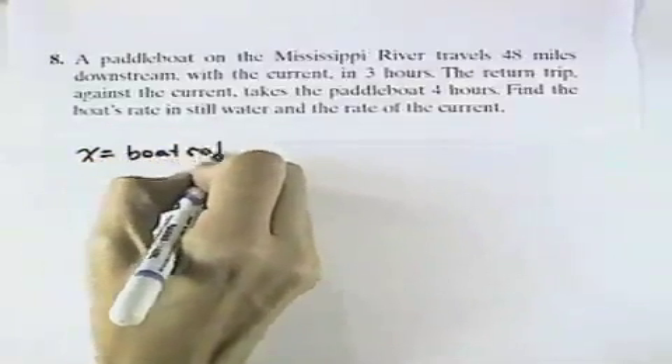We're using our four-step strategy. First thing we want to do is identify the variables. So let's let x equal the boat's rate, and we'll let y equal the current rate, or the rate of the current.